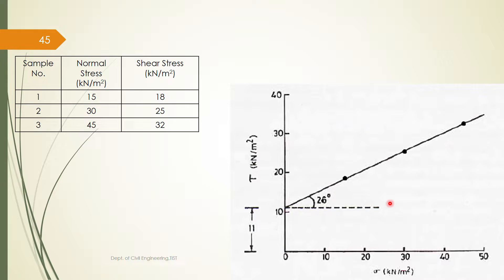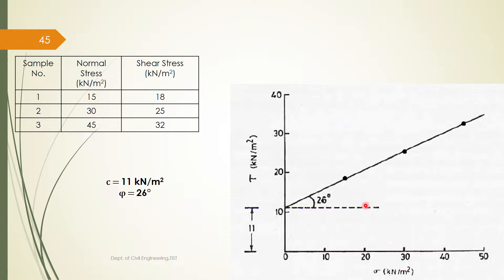The y-intercept will be your c value, that is the cohesion value. The failure envelope meets the tau axis at a point, and from the origin to that point the distance is 11 kN/m². So your c value is 11 kN/m² and the φ value is 26 degrees. You can plot this on a graph sheet. This is how you solve this problem.